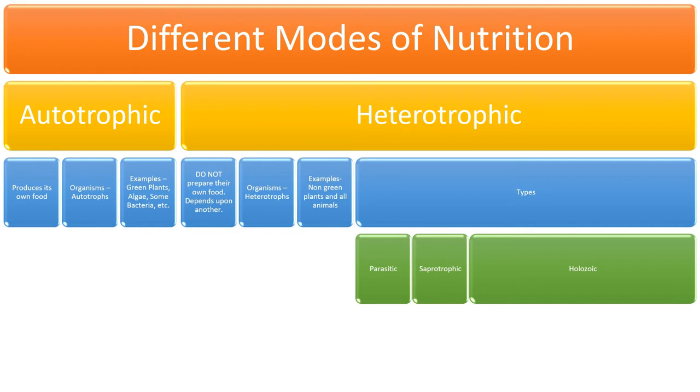Examples of organisms showing holozoic nutrition are omnivores. Omnivores are those group of organisms that feed upon plants and also flesh of other animals. Examples include human beings and crow.